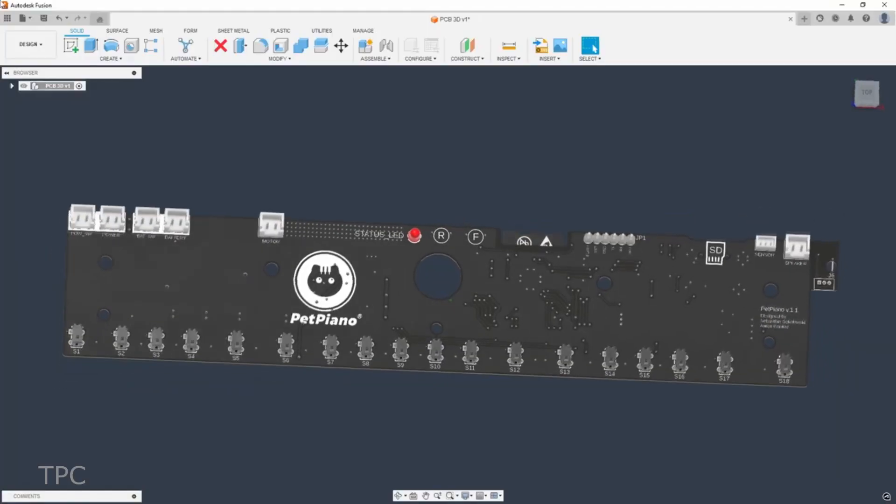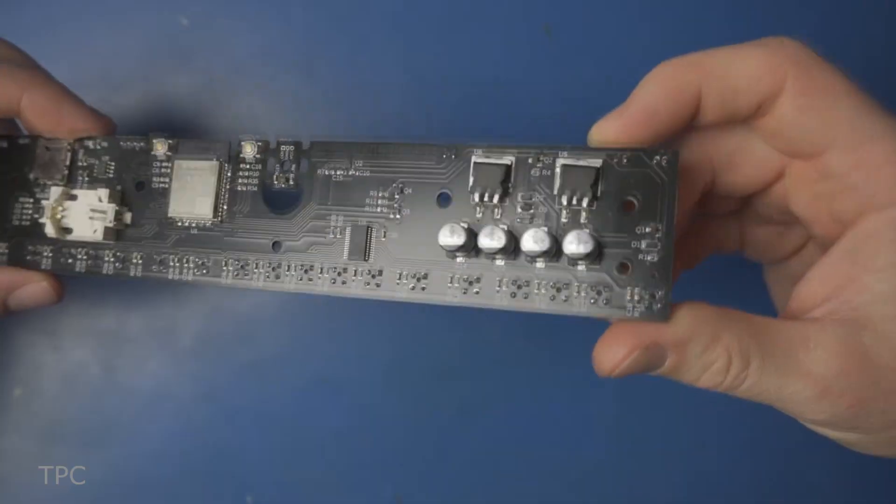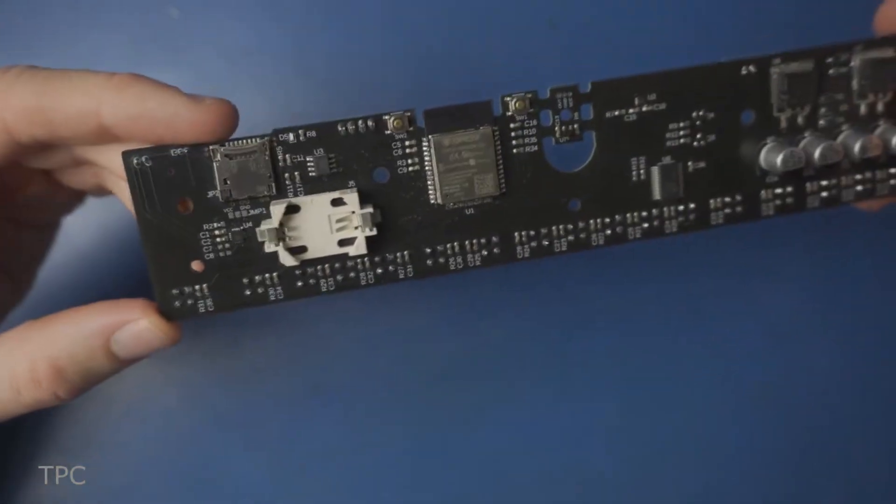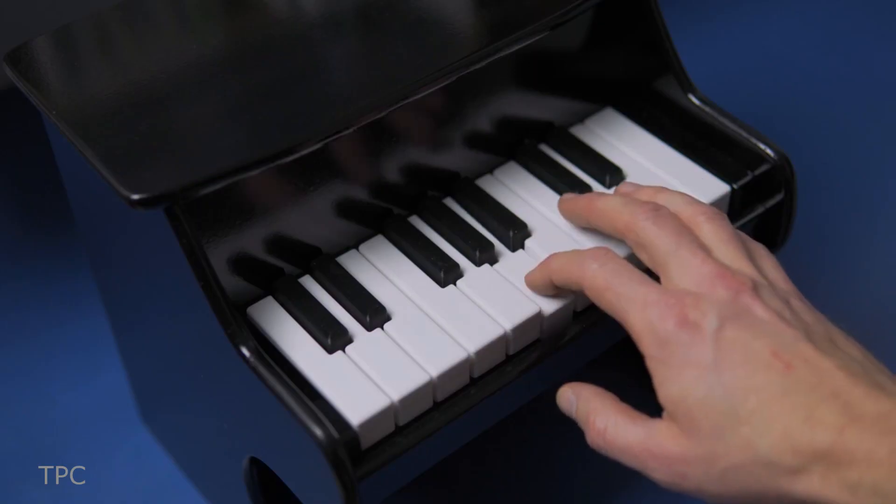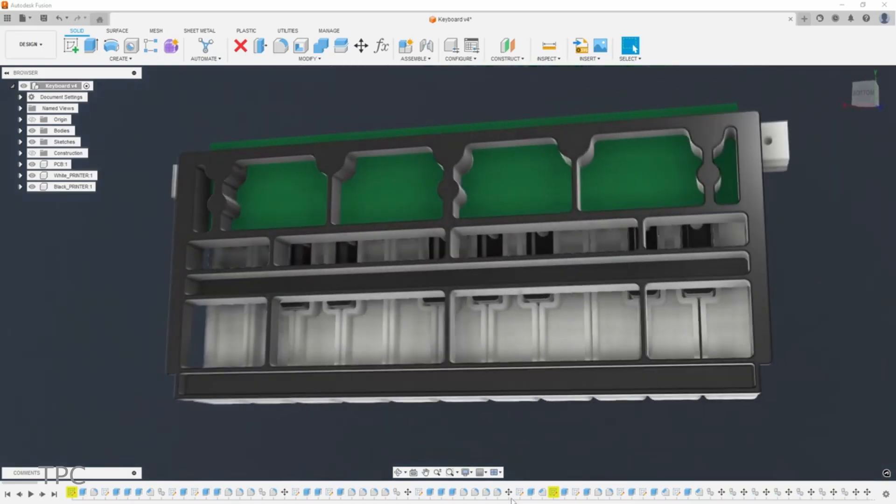For the electronics, he designed a compact PCB containing an ESP32 chip, a motor driver, an audio amplifier, and 18 switches for detecting each piano stroke. This PCB is sandwiched between the piano keys and the frame.